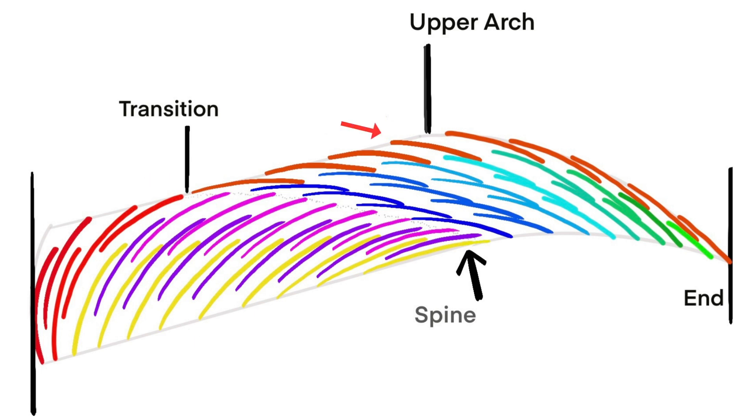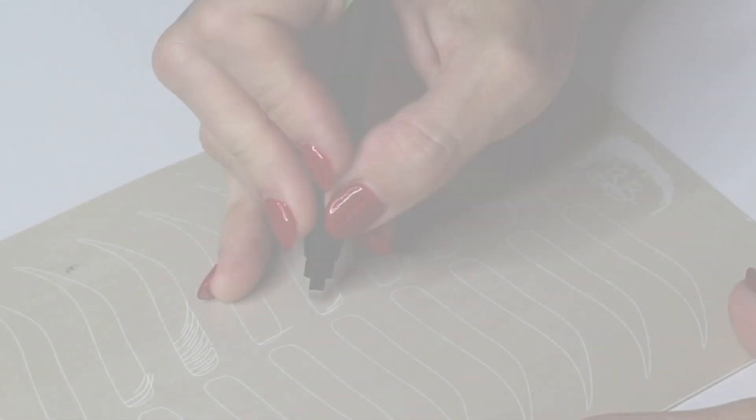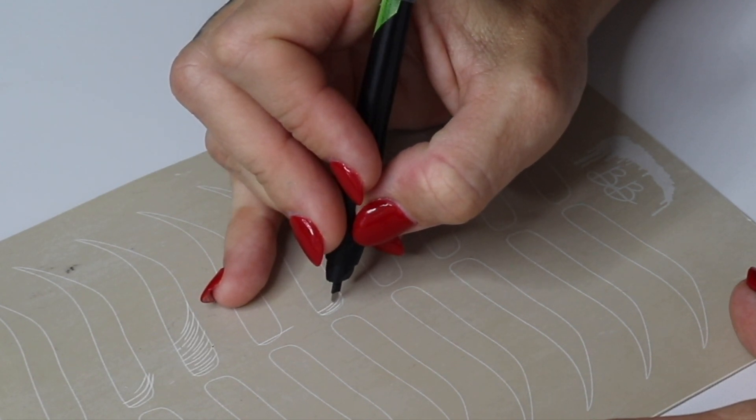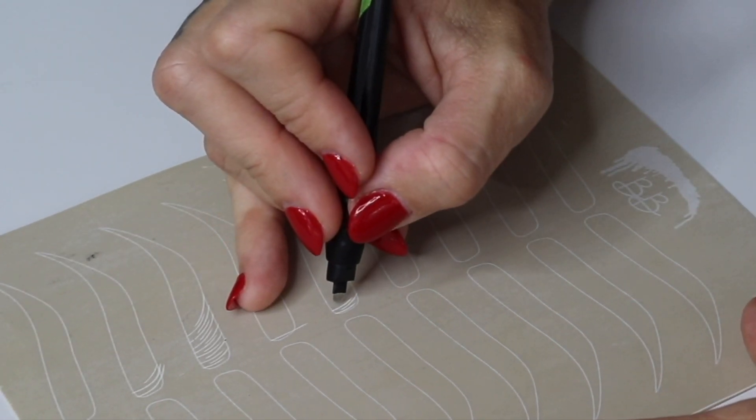This will create a smooth and fluid transition between different groups of strokes. So throughout all of your strokes always pay attention to not just where you are starting your stroke but where is it that you want your stroke to go.